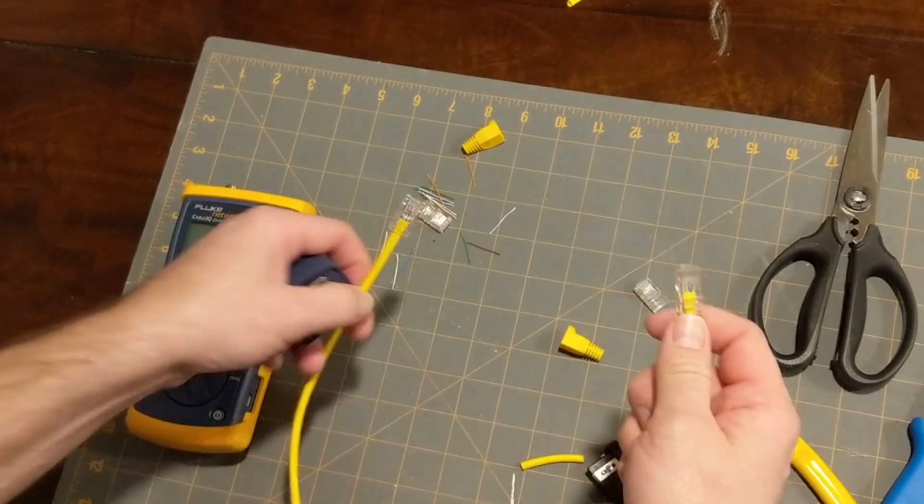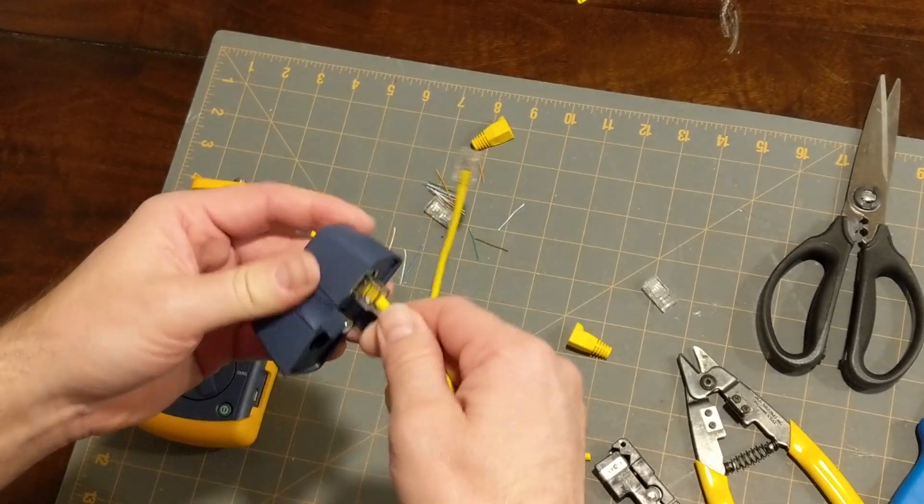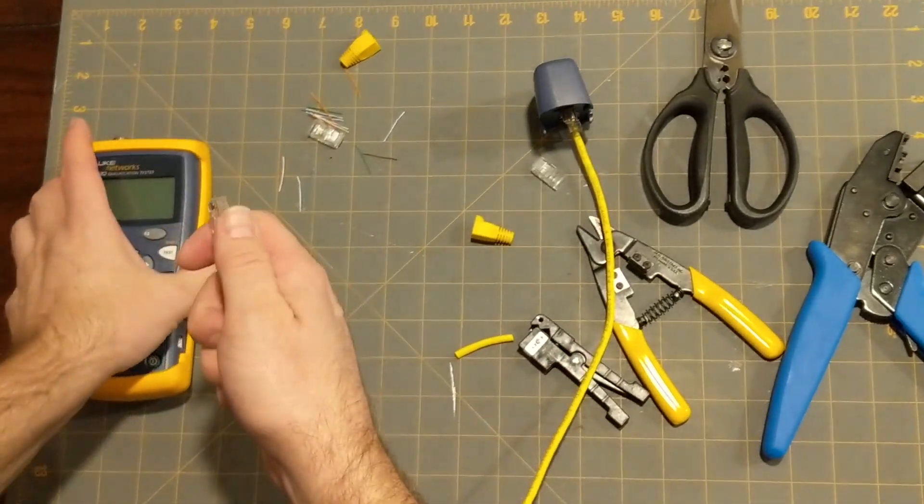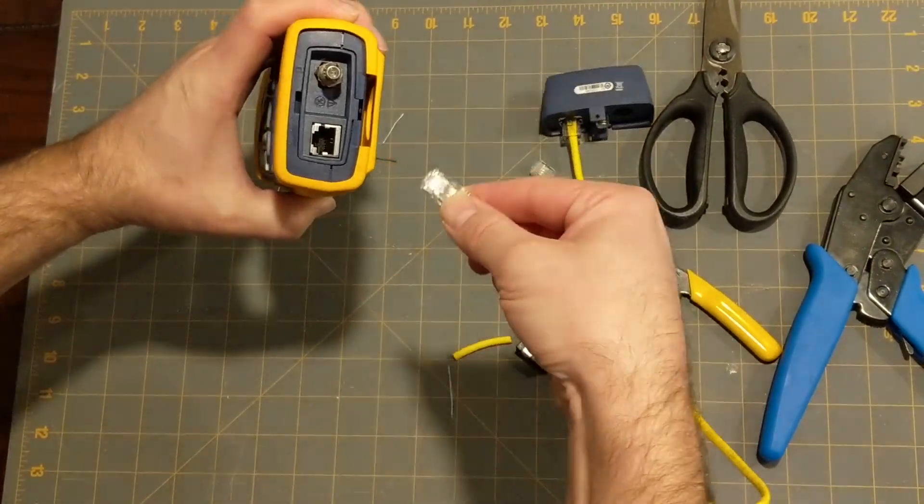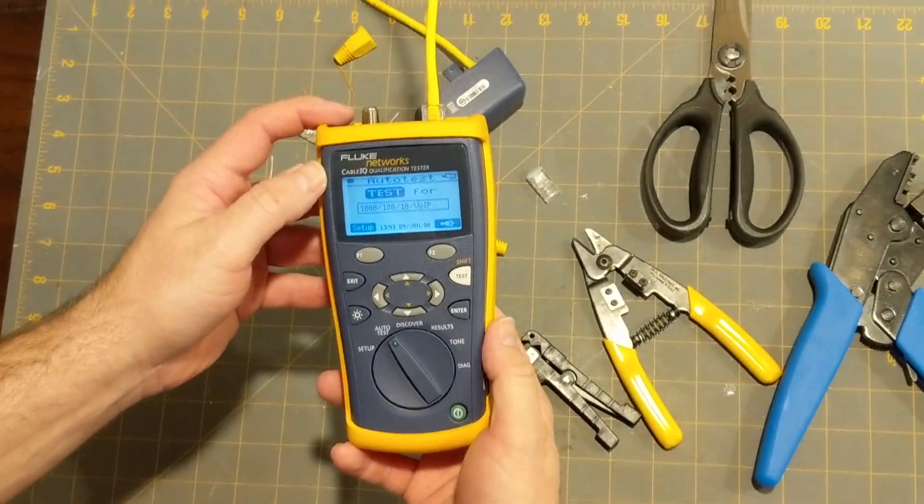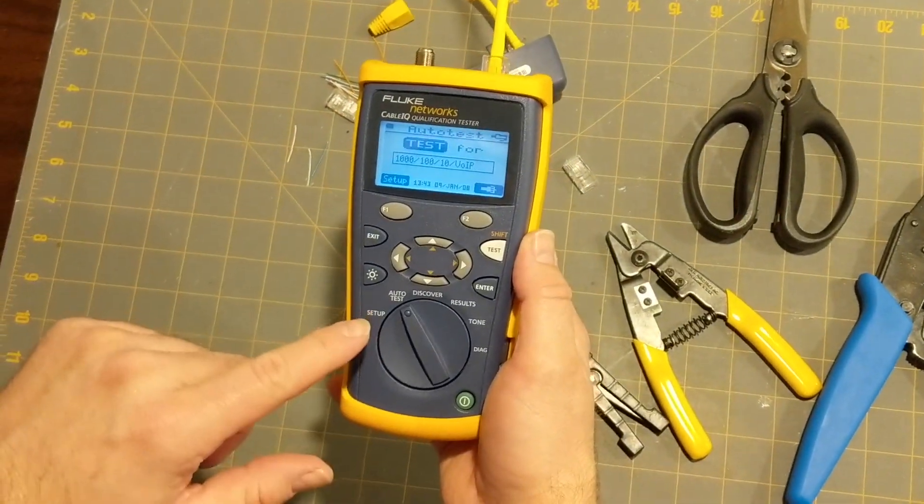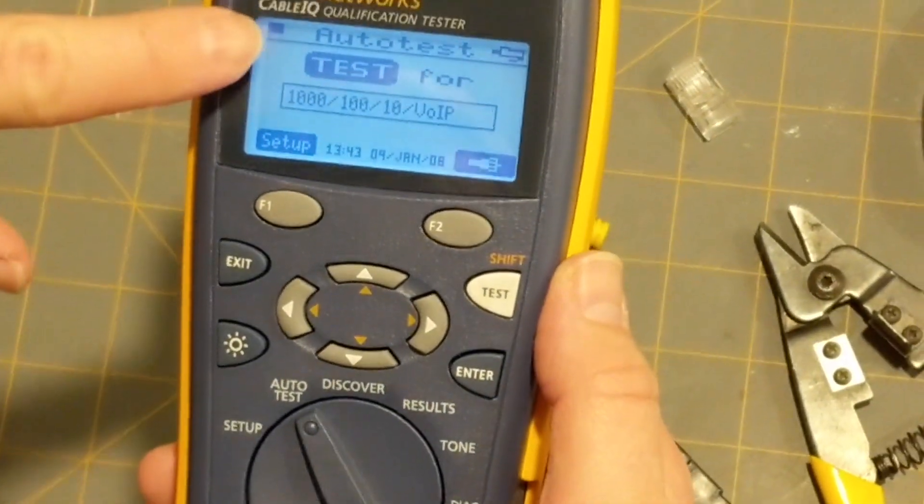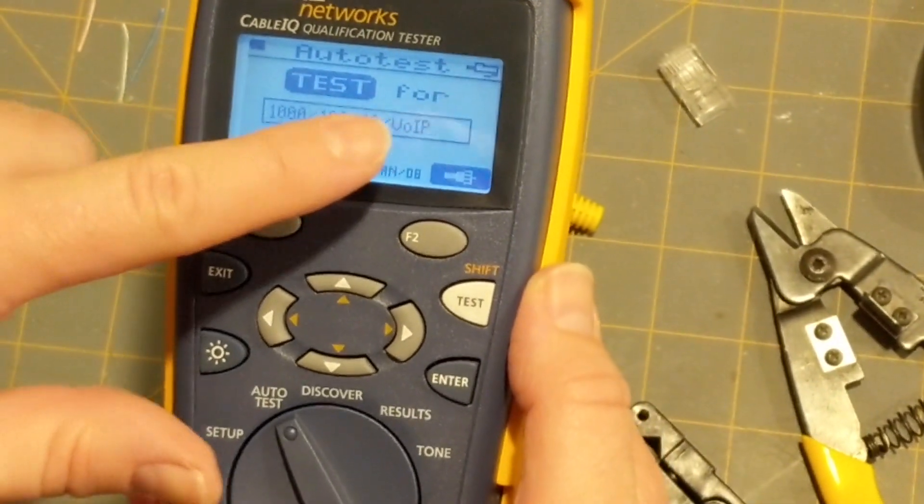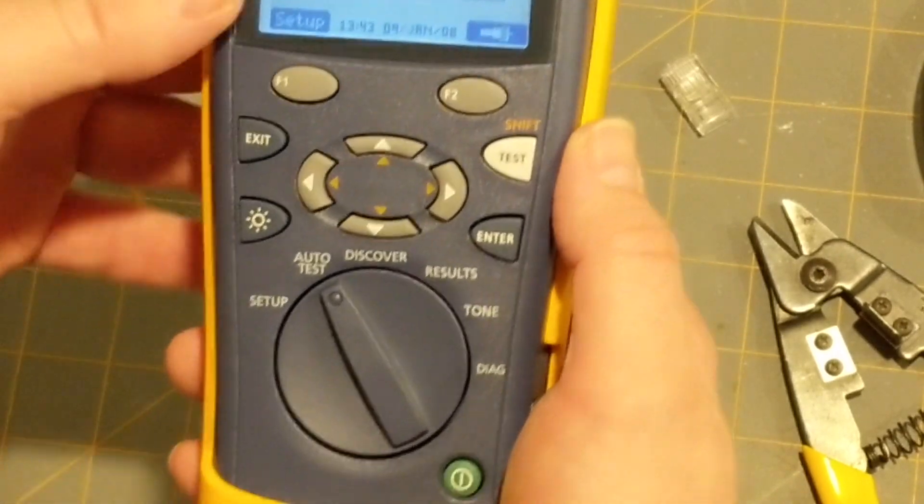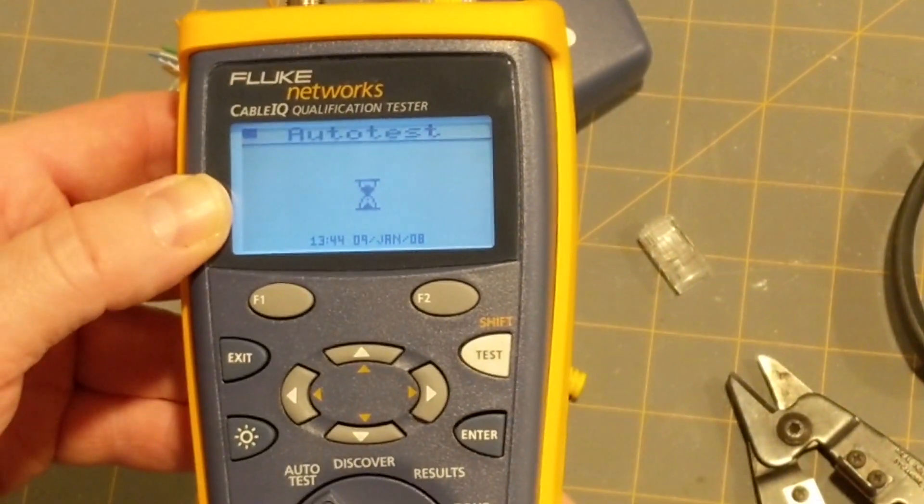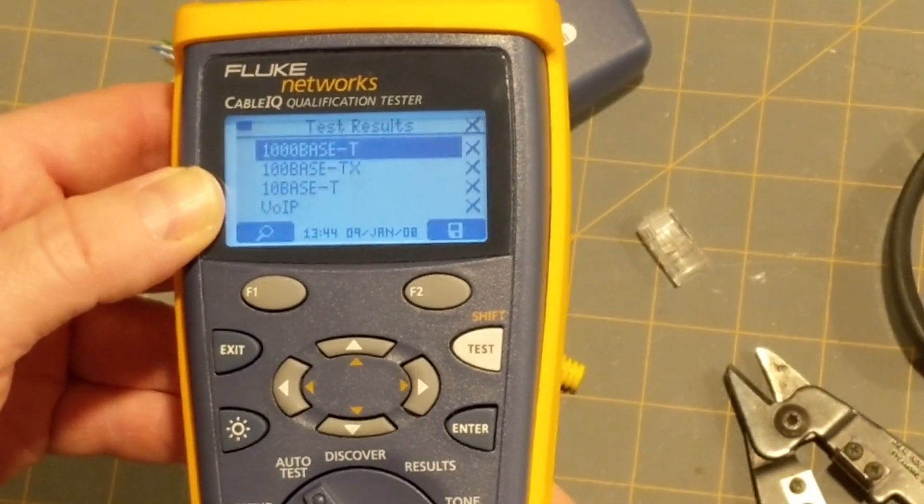So, once I have both my connectors on, I'm going to connect one end of it, doesn't matter which, into this terminator for the tester, and I'm going to put the other end into this connector here, and then I'm going to turn on the tester. I'm going to make sure that it's selected to auto test, and that it's going to test for 1,000 megabits, 100 megabits, and 10 megabits, and in this case, voice over IP speeds. Once I know that it's ready to test, I press the test button, it runs for a moment, and it tells me how well it tested out.